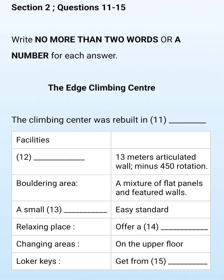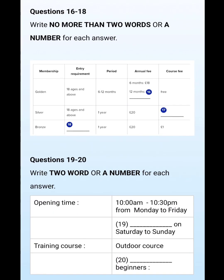Now look at questions 16 to 20. Now listen carefully and answer questions 16 to 20. At the Edge you can pay per visit or save on course fees by becoming a member. We have three types of membership.